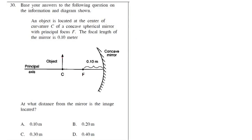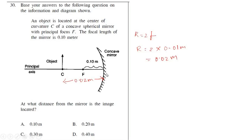The object is at C and we know that the radius of curvature is double the focal length. So radius of curvature is twice 0.01 meter, which is 0.02 meters — that is the distance from the pole. When the object is at C, the image is also formed at C. So the image is again formed at point B.